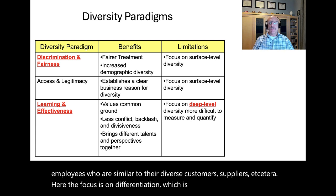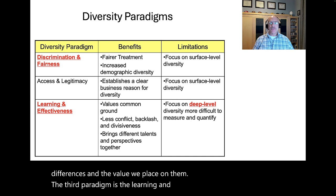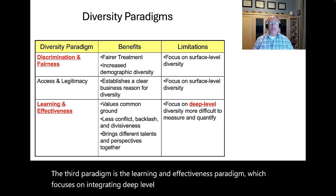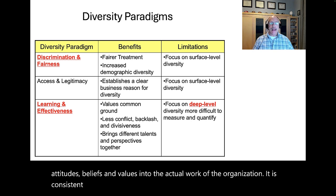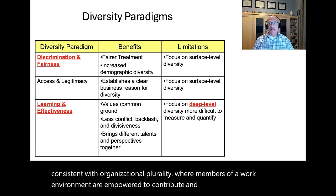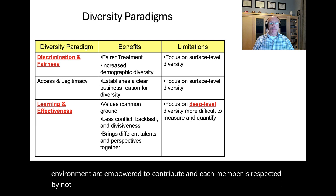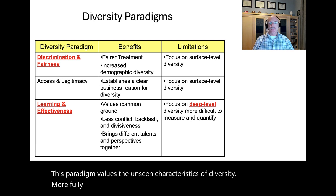The third paradigm is the learning and effectiveness paradigm, which focuses on integrating deep-level diversity differences — such as personality, attitudes, beliefs, and values — into the actual work of the organization. It is consistent with organizational plurality, where members of a work environment are empowered to contribute, and each member is respected by not segmenting people on the basis of group membership. This paradigm values the unseen characteristics of diversity to more fully enable organizational success.